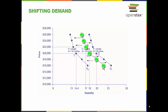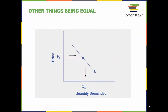The demand curve can be used to identify how much consumers would buy at any given price. If the price changes, then the quantity demanded changes, but remains on the same demand curve. This simplified model illustrates an important assumption made in economic theories and models: ceteris paribus. This Latin phrase means 'other things being equal.' In the supply and demand models, we hold all other variables equal and look only at the factor of price.